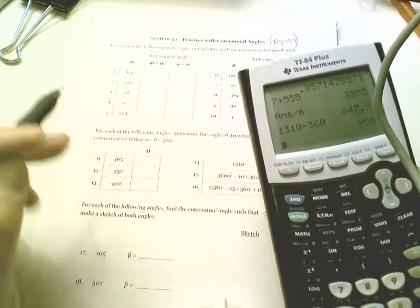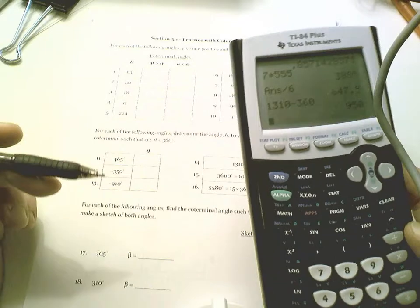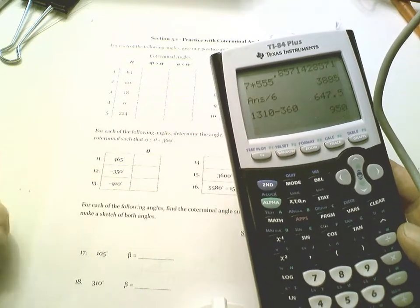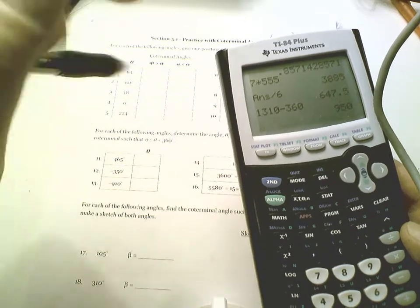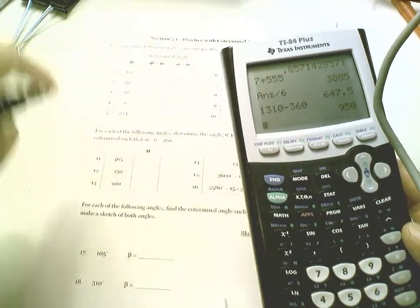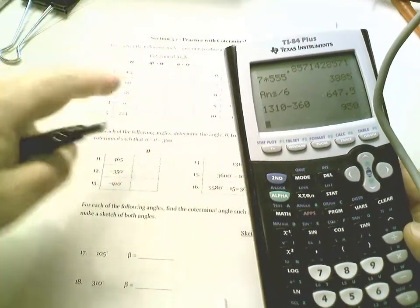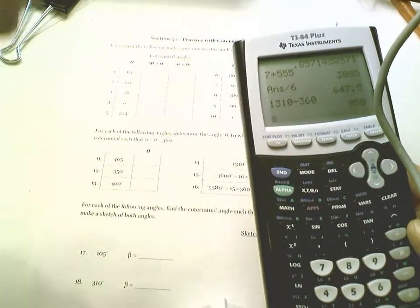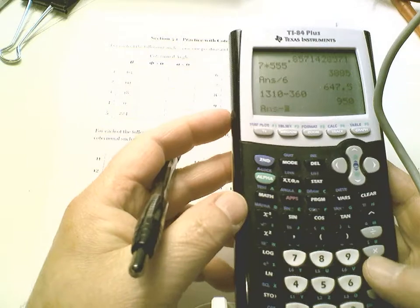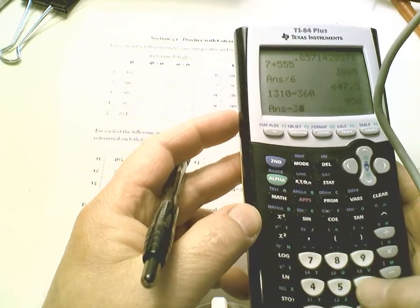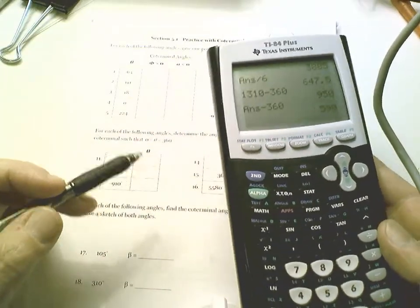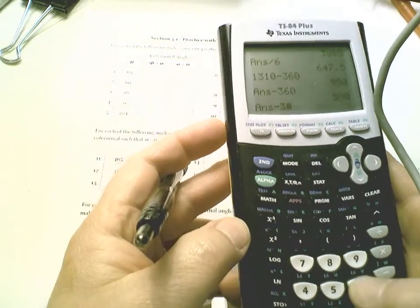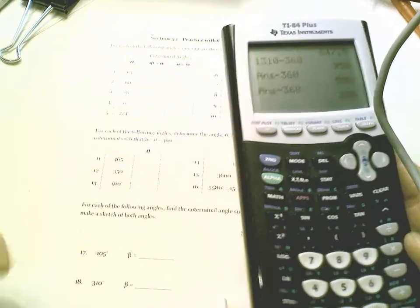1310 minus 360 brings me to 950. Not good enough. I need to keep unwinding the angle. Think about it that I've made too many revolutions, like it's a piece of string, and I need to loosen that string. Take away another 360 degrees. Still not good enough, 590. Unwind one more time. Subtract 360, 230.